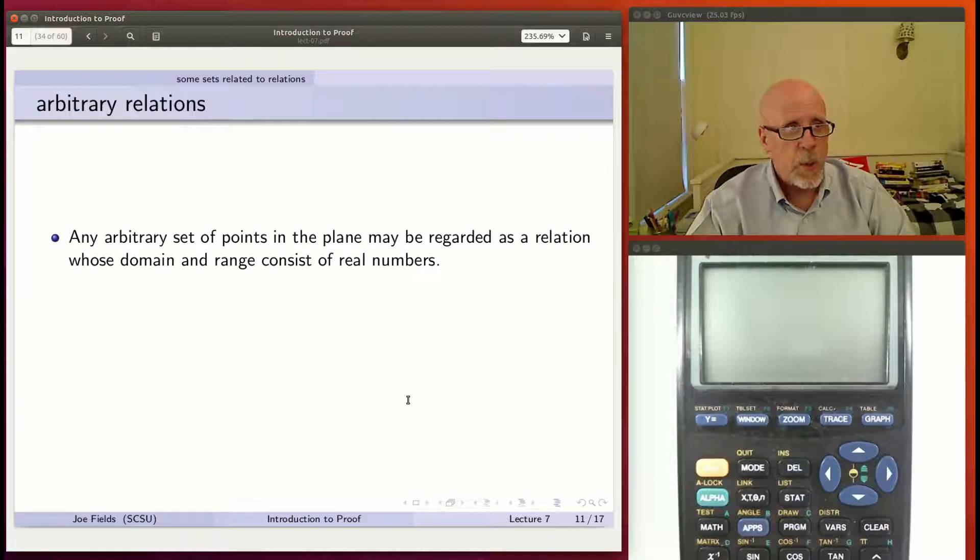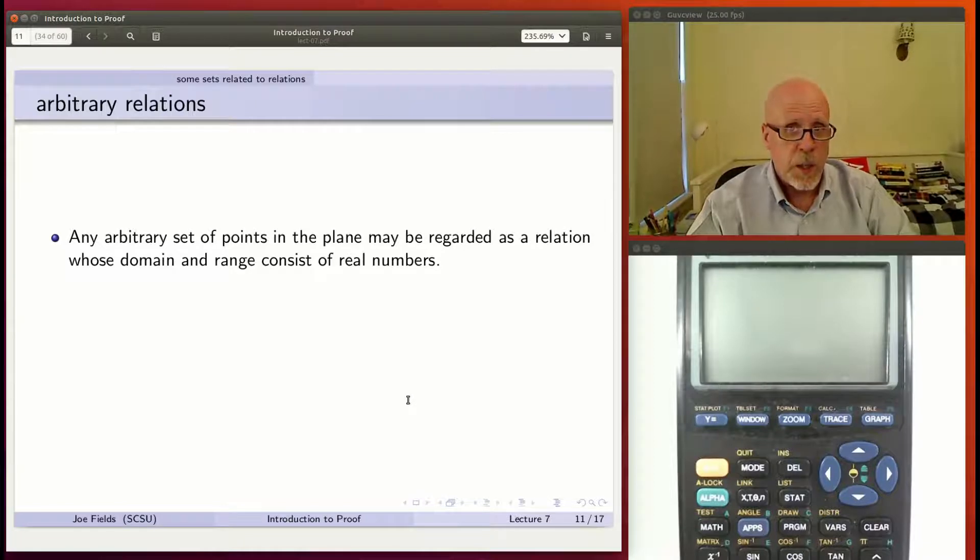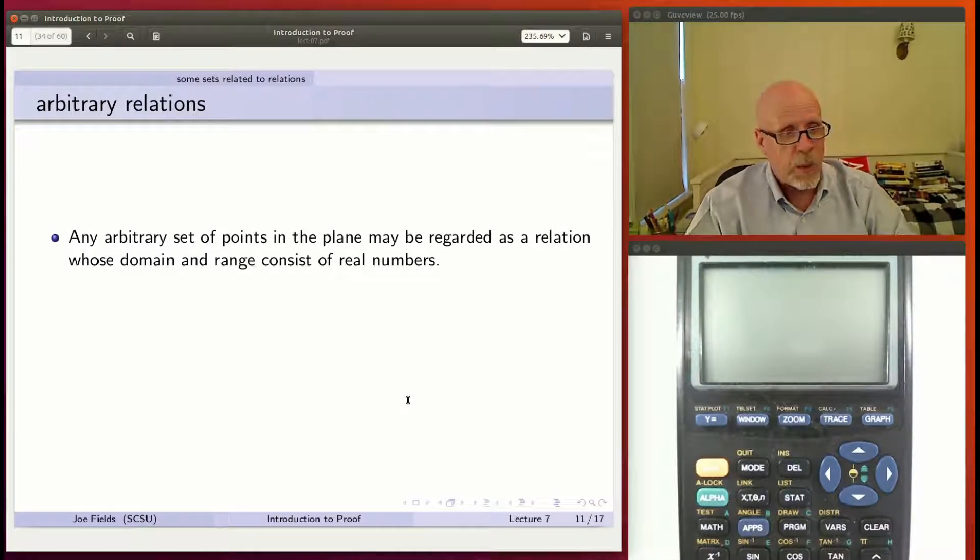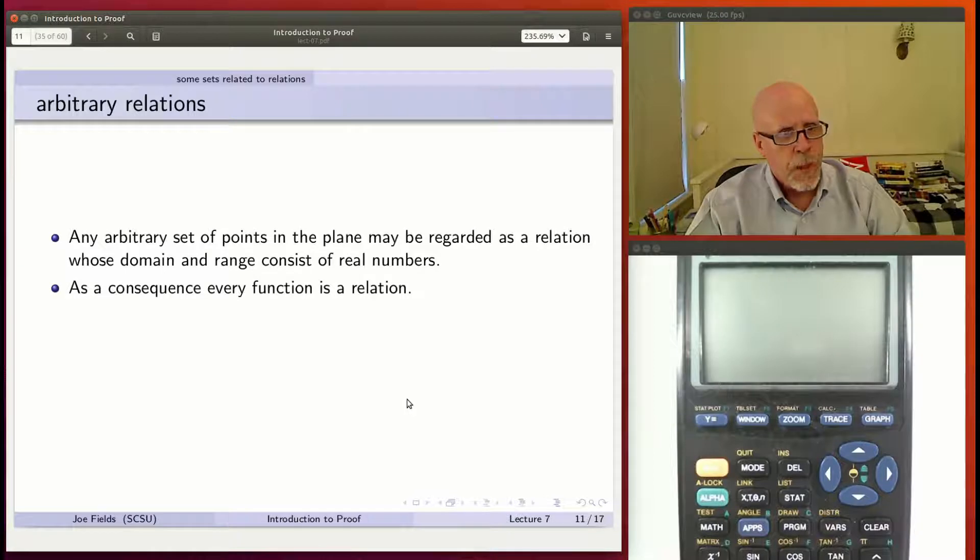Let's talk about arbitrary relations for a bit. It's simple. It's an arbitrary set of points in the plane. That's a relation. It's defining a relation by what points are in that relation. And the domain and range consist of real numbers, because we're talking about, in both cases, they're subsets of, on the one hand, the x-axis, and on the other hand, the y-axis. But in the ordinary way we think of the plane, both axes are real numbers, the sets of real numbers.